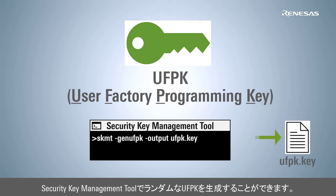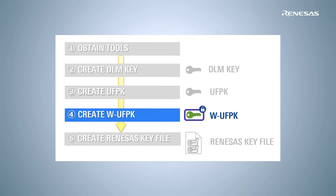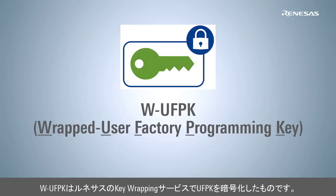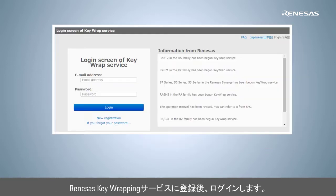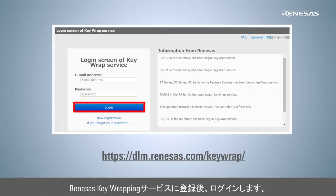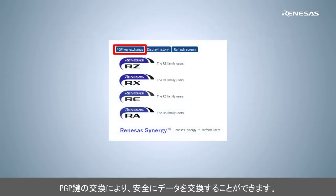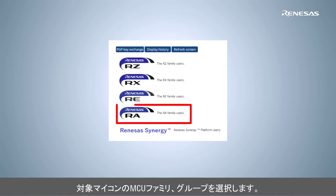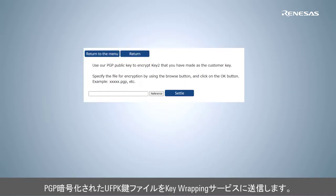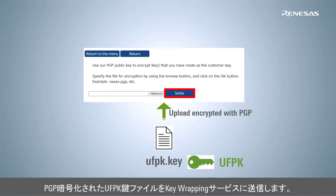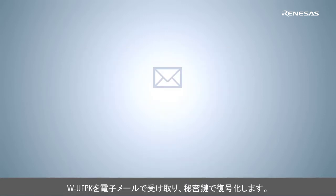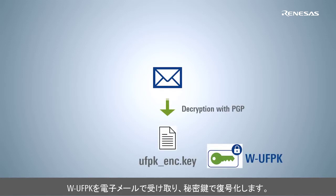Now we must wrap the UFPK to create the WUFPK. The WUFPK is created from the UFPK by the Renesas key wrapping service. Register and log in to the key wrapping service and perform a PGP key exchange. To wrap the UFPK, select the target MCU, use the Renesas public key to encrypt the UFPK key file, and upload the encrypted file. You will receive the WUFPK key file by email, encrypted with your public key.